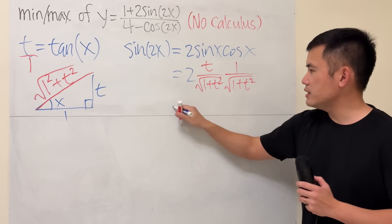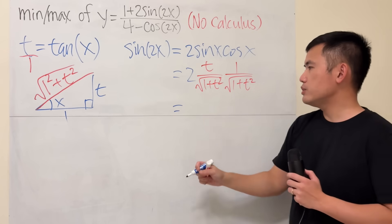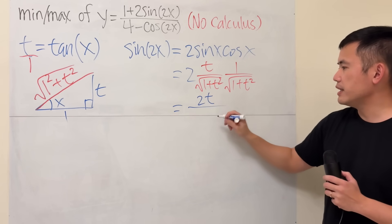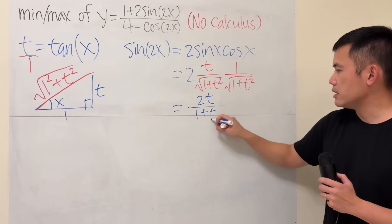And then work that out. We see that sine of 2x is just going to be 2t on the top over this and that we just get inside, which is 1 plus t squared.